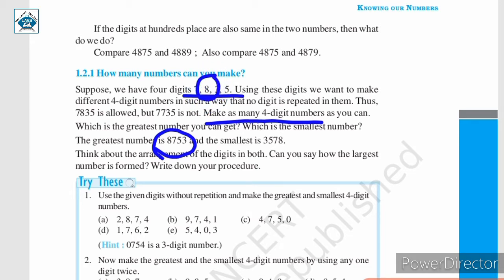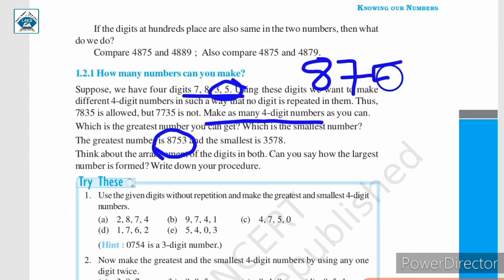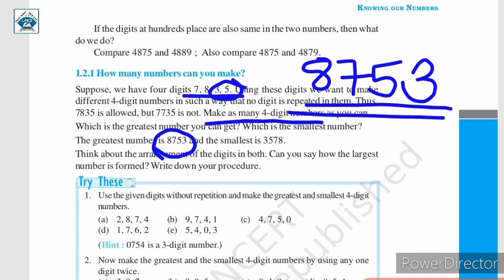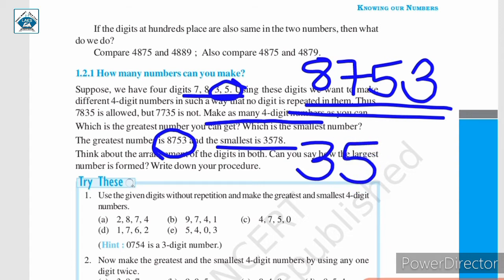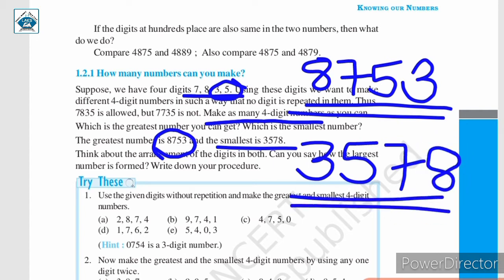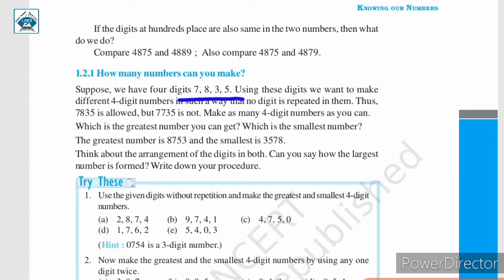Among 3 and 5, 5 is greater, so we will write 5 next, and lastly the digit that is remaining, which is 3. In this way, we can form the greatest number. And how will we form the smallest number? Just reverse the order — arrange the numbers in ascending order. The smallest is 3, so we write it first. After that, the second smallest is 5, then comes 7, and lastly 8. So, 3,578 is the smallest number which we can make using these 4 digits.